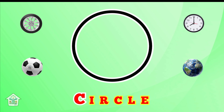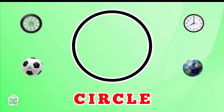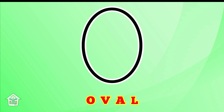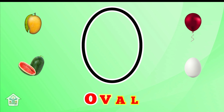What shape is this? C-I-R-C-L-E, circle. Good. Now which type of shape? O-V-A-L, oval. Good.